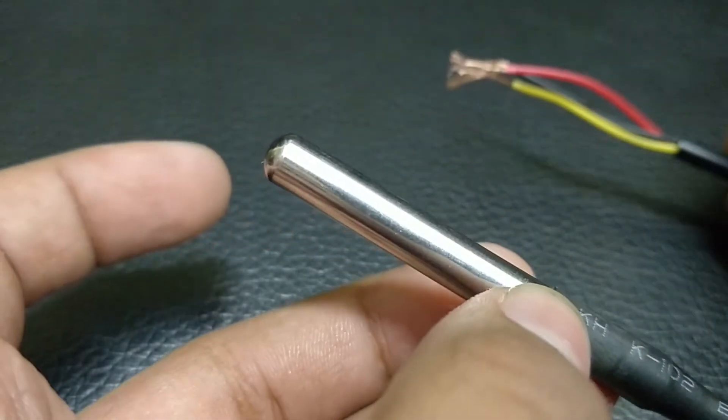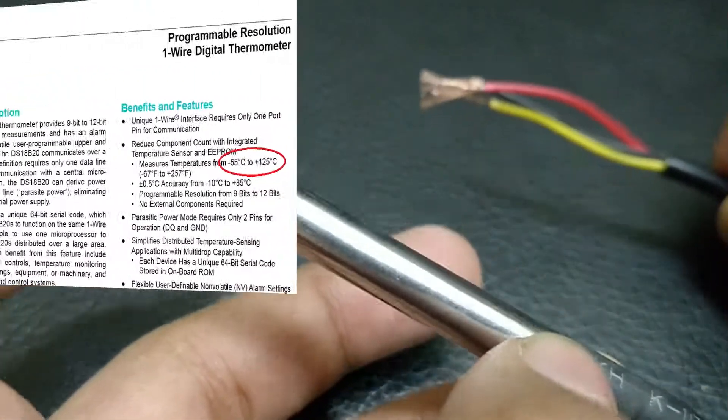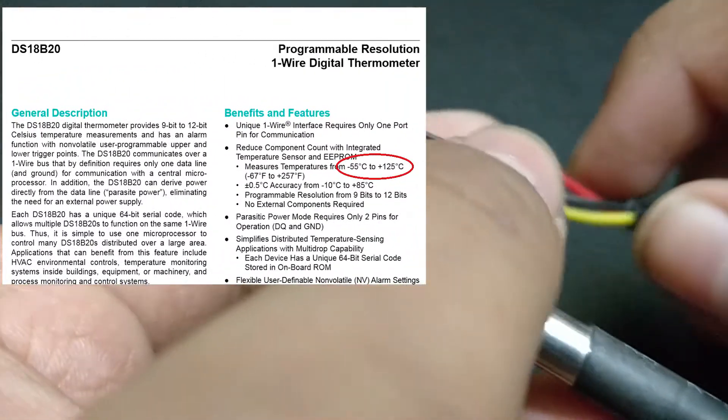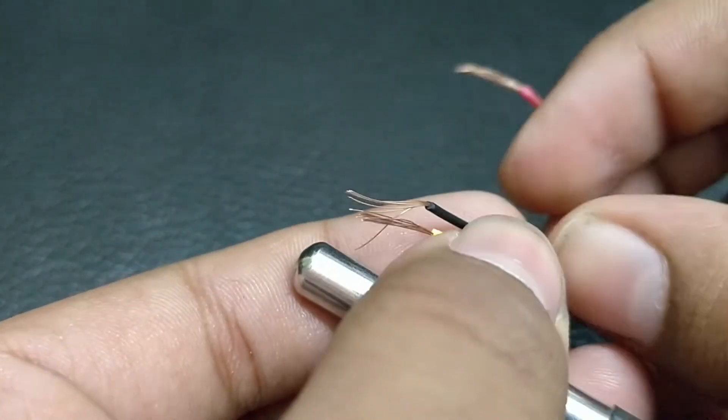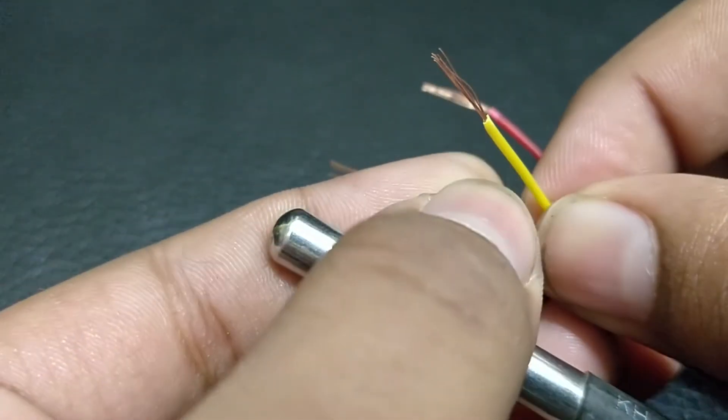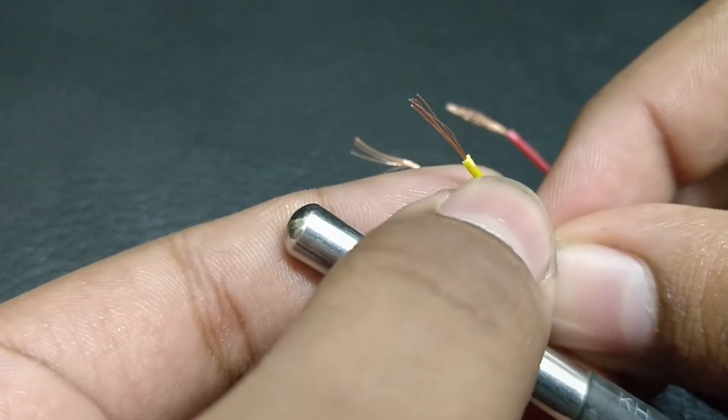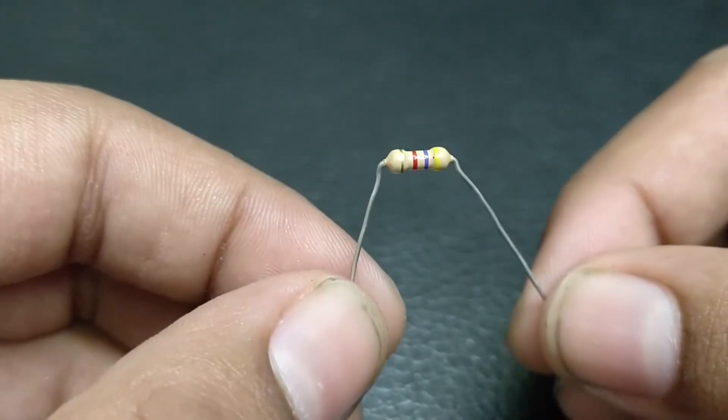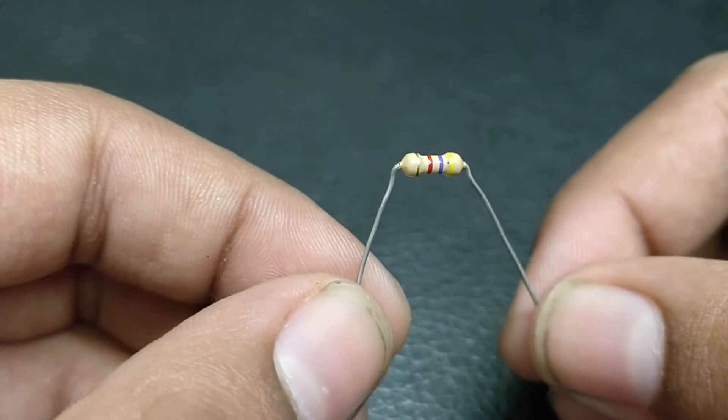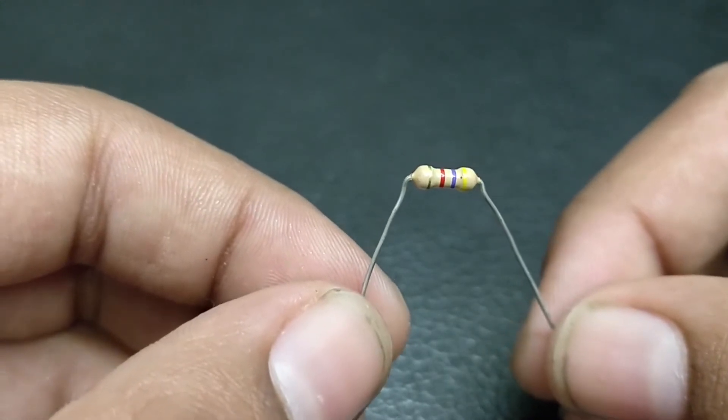It measures temperatures from minus 55 to 125 degrees Celsius. The red is positive. The black is ground and the yellow one is data.